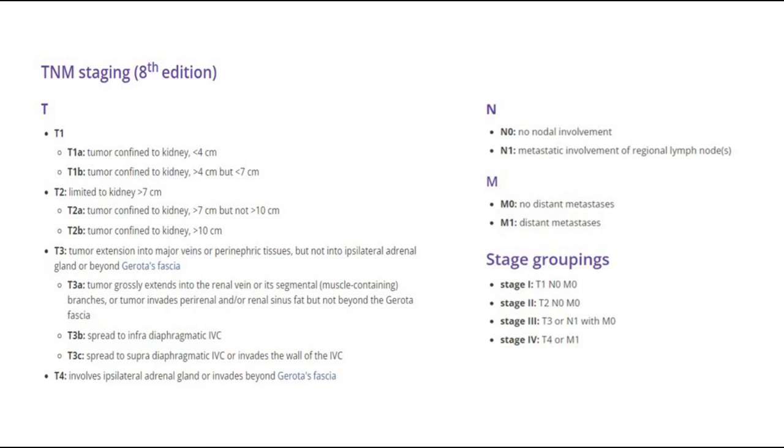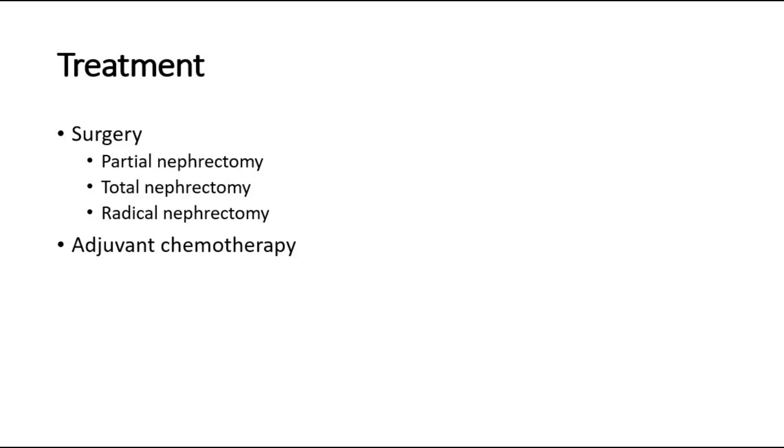For the treatment of resectable tumors, surgery is performed with or without adjuvant therapy, followed by surveillance after resection to detect any relapse early. Surgery can be laparoscopic or open, using a retroperitoneal or transperitoneal approach. Partial nephrectomy is indicated for tumors less than 5 cm or T1 stage. Total nephrectomy is for tumors more than 7 cm, and radical nephrectomy — which removes the whole kidney along with Gerota's fascia and nearby lymph nodes — is done for T2 disease.